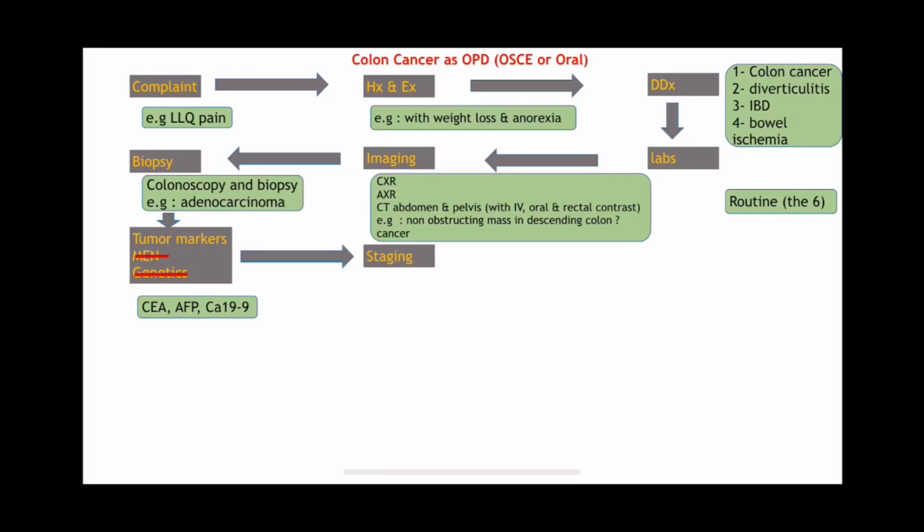The next step is staging. We have already done the CT abdomen and pelvis, so what we additionally need is a CT chest — and we don't need contrast for this one, so a plain CT chest is enough. This is not the commonest presentation for colon cancer, but I'm giving one example. We will have different scenarios later — someone presenting on the right side, someone presenting with bleeding — in other videos.